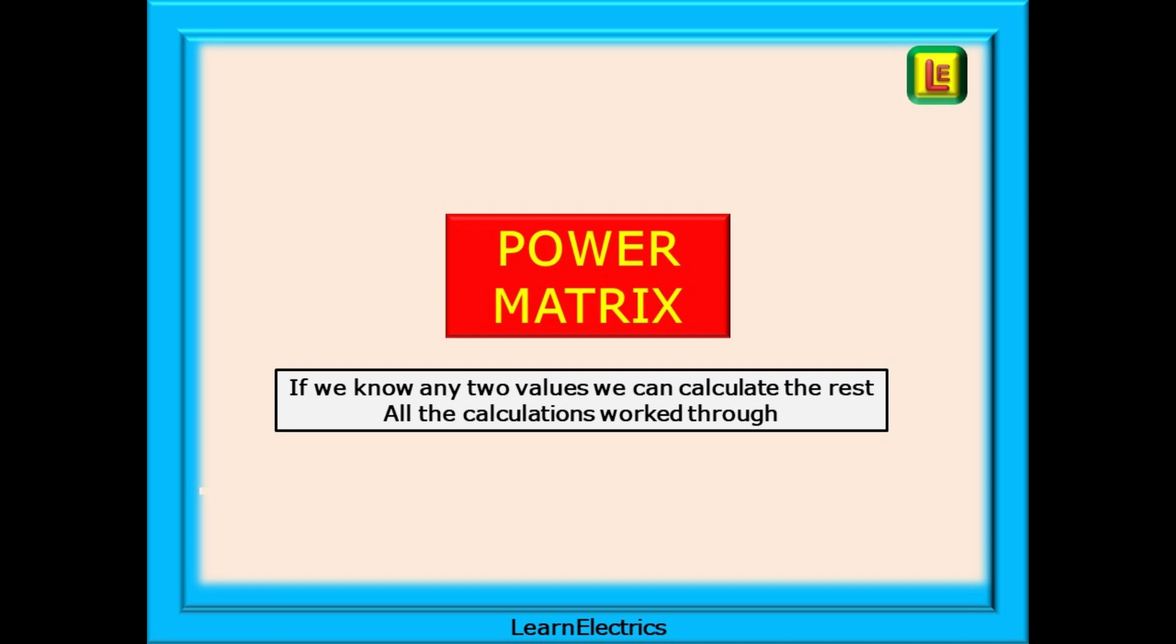Now we can look at the power matrix as I call it. This matrix combines the two triangles together which means that if you know any two values we can easily calculate the other two. We can show you this in action. We will work through all the calculations so that you fully understand what to do and we will give you some examples at the end to make your own calculations.